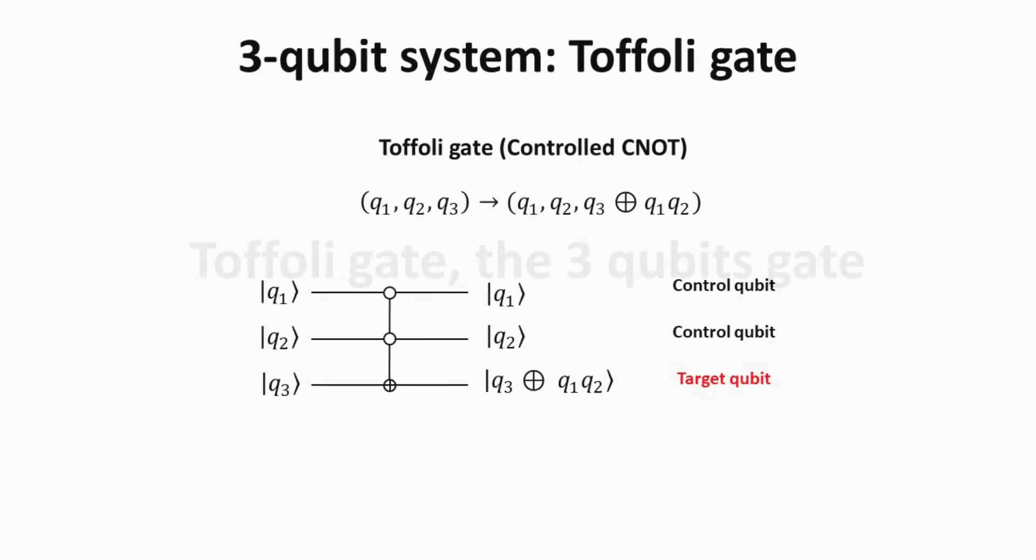Part 6. Toffoli Gate. The 3 qubit gate. In what follows, we will give an example of a 3 qubit gate. The Toffoli gate is also called the controlled CNOT gate. It is the 3 qubit extension of the CNOT that we just learned. Instead of having one, we now have two control qubits. The target qubit is given by the XOR operation of Q3 with the product of Q1 and Q2.